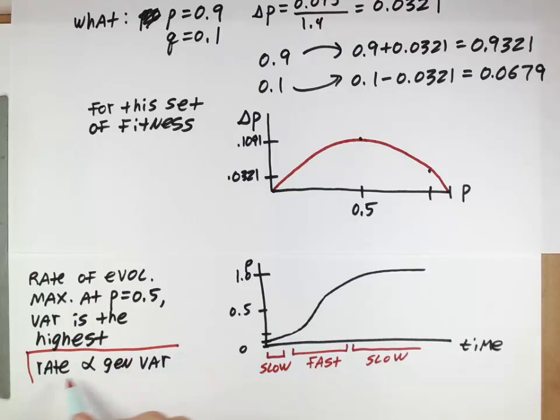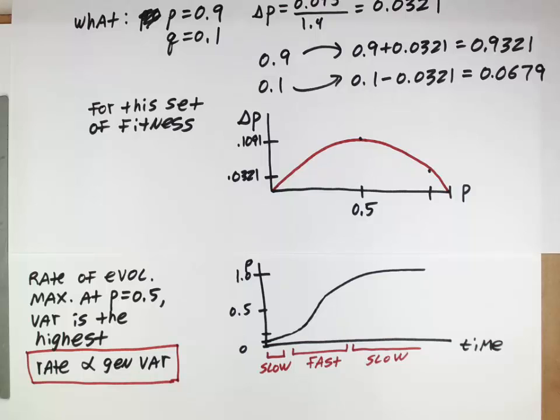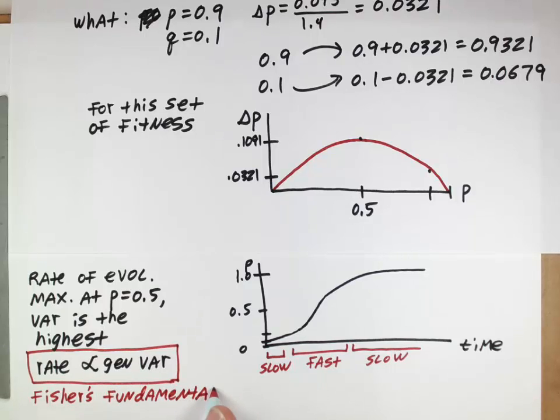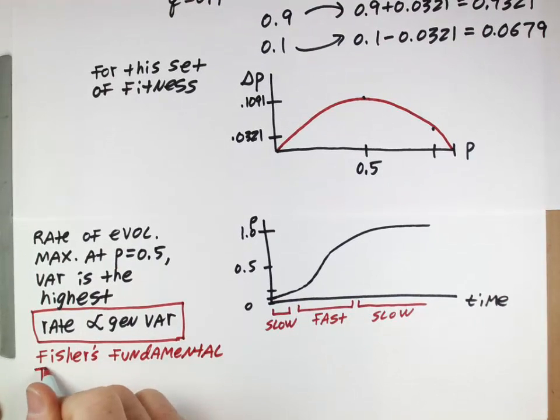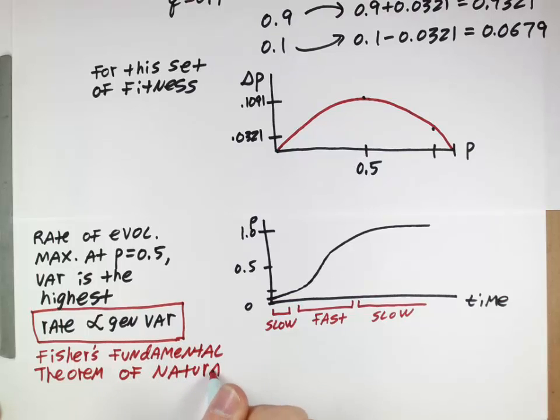This kind of idea here, that the rate of evolution is proportional to the genetic variation, where more variation gives you a faster rate of evolution, this is called Fisher's, that's our guy from the modern synthesis, Fisher's Fundamental Theorem of Natural Selection.